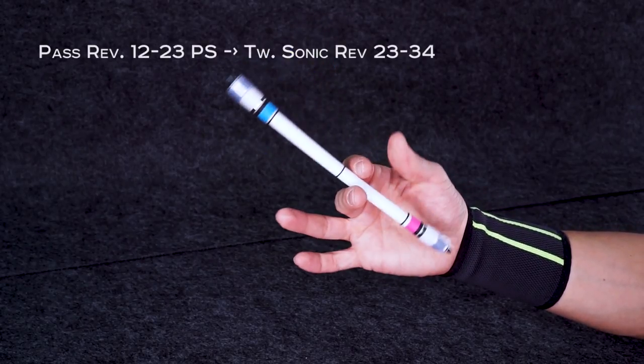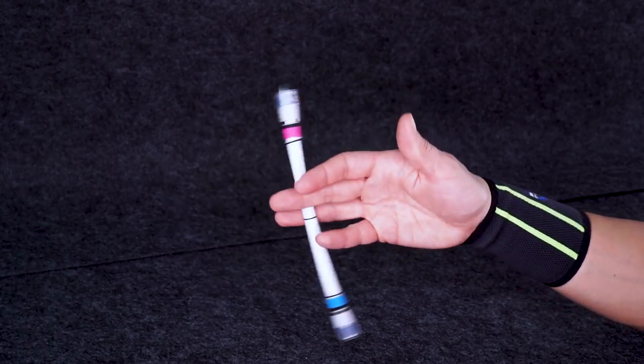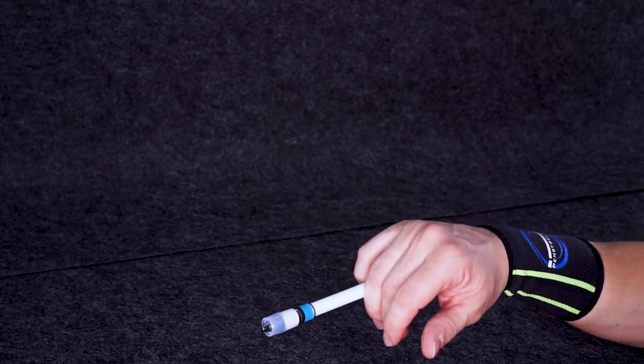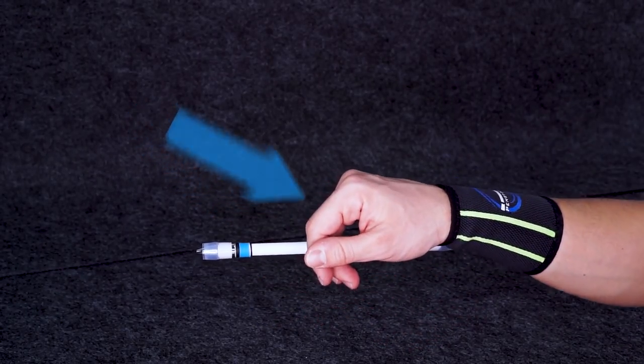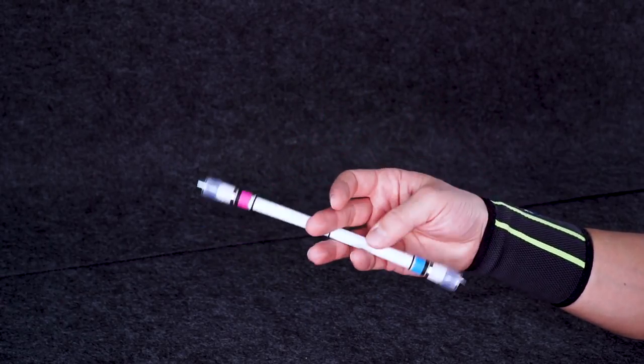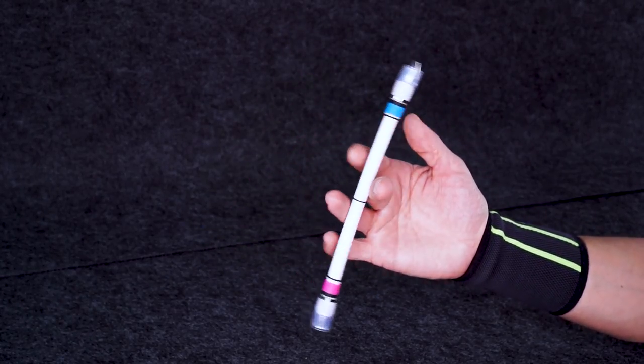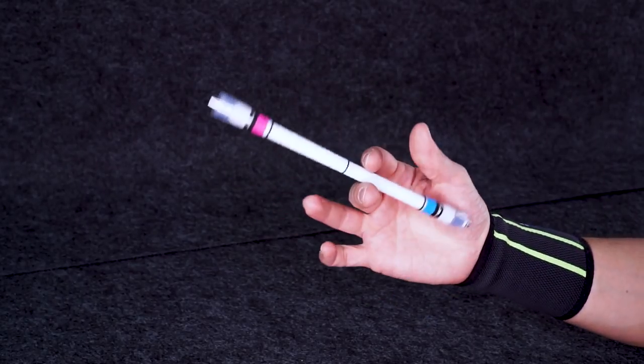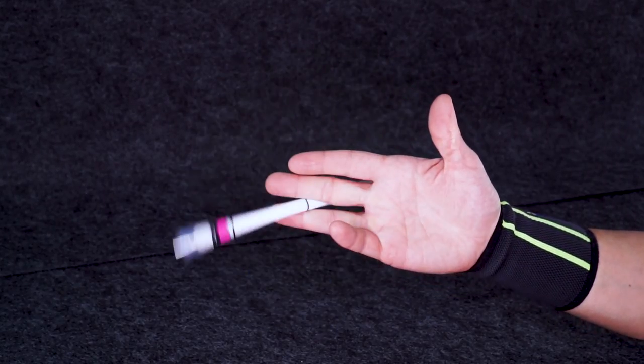Now we need to link Pass reverse 1223 with Twisted sonic reverse 2334. When you finish the movement, wrist should get back to palm down position. Again, that's the same concept as I showed in Twisted sonic linkage, just in different slots and passes replacing some of the Sonics. When you do Pass reverse, as pen shifts from 12 to 23, push it a bit harder with your ring finger and raise middle a bit sharper than you do while doing finger pass. You should give your mod enough inertia to move further and make Twisted sonic reverse 234.